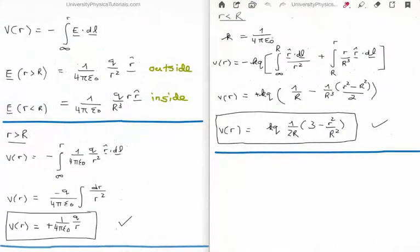So we have two integrals here. The first integral is very similar to our previous integral. The only difference is the upper limit. Instead of it being small r, it's capital R. So the upper limit is right to the edge of the sphere. And then we integrate from the edge of the sphere, capital R, to whatever point we like inside the sphere, small r.